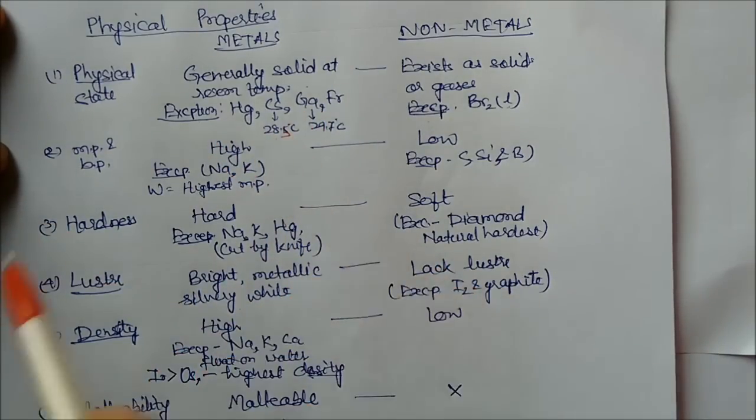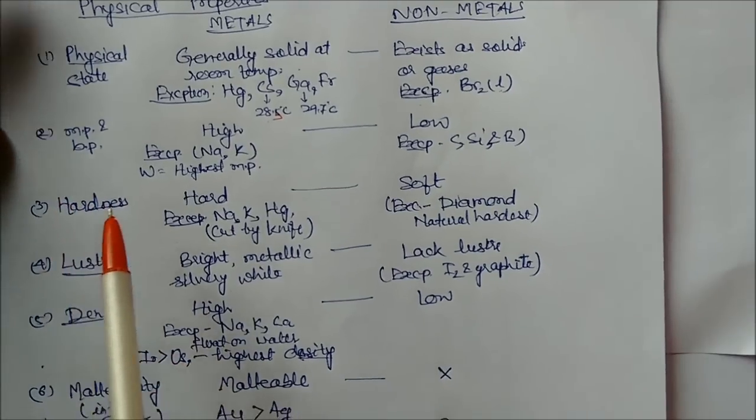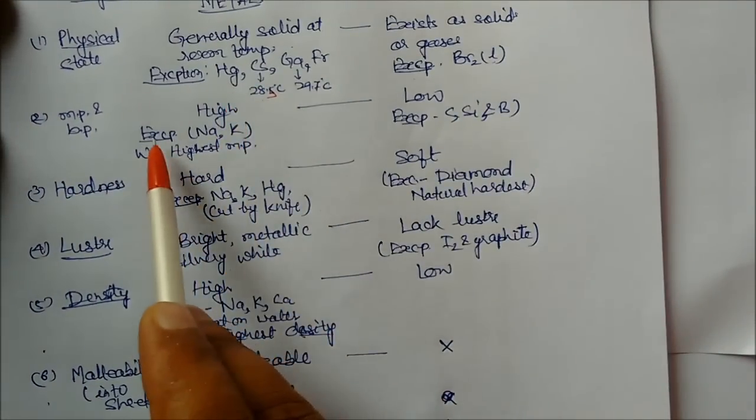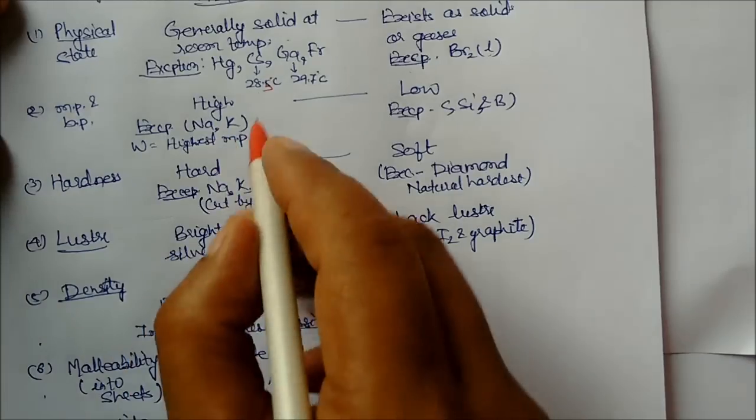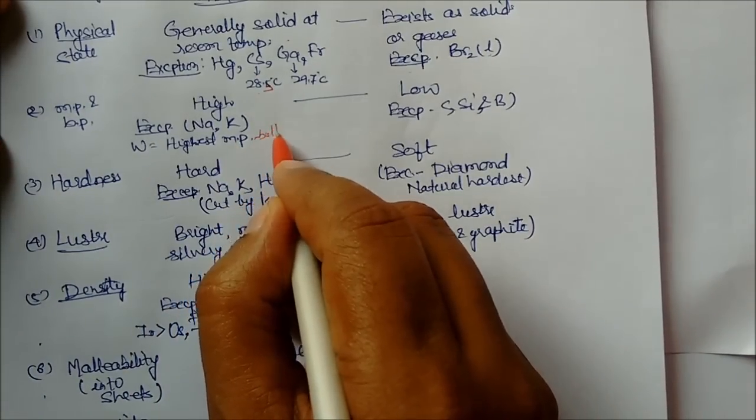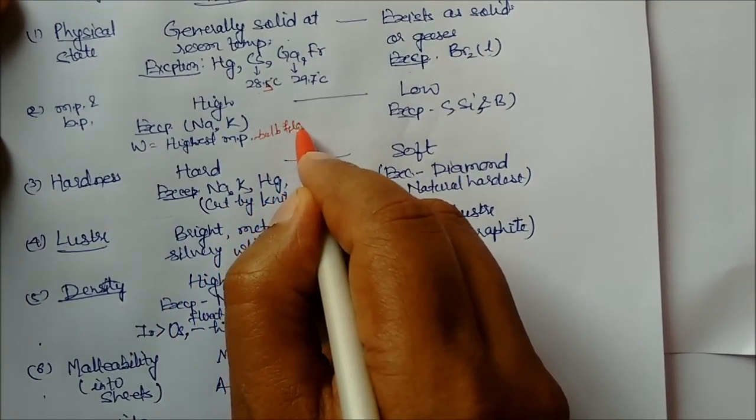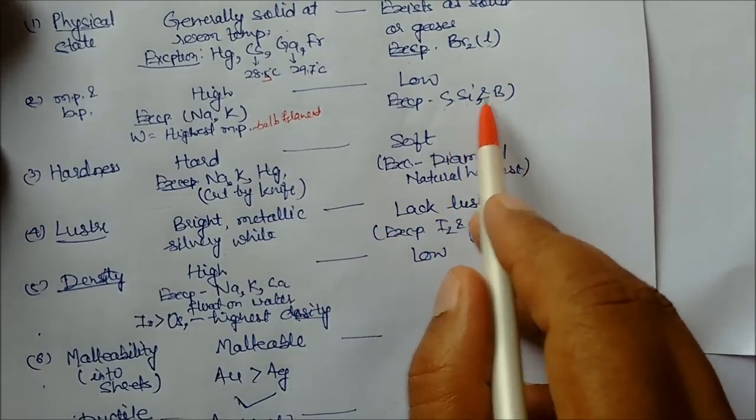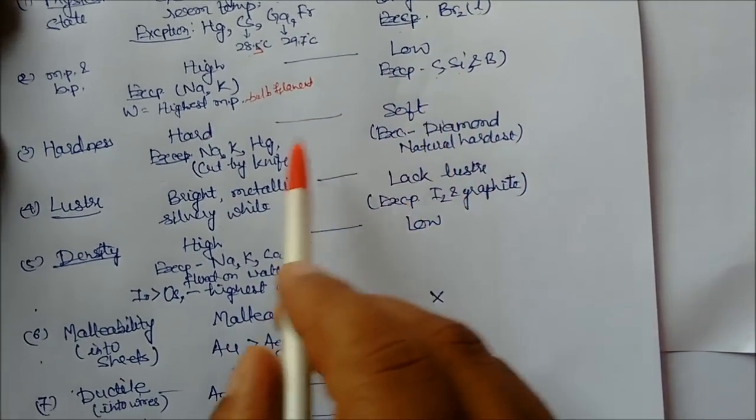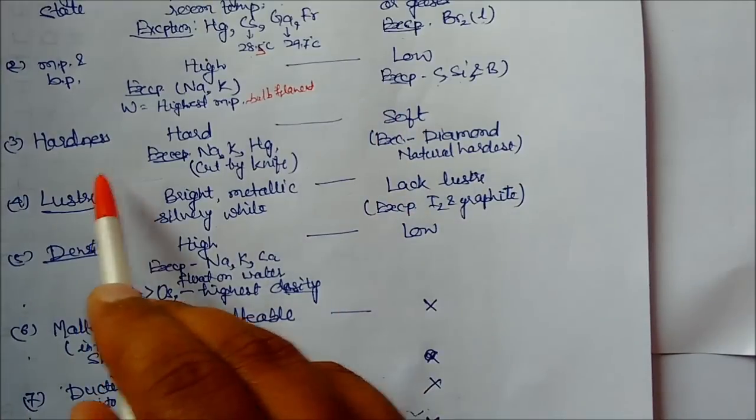Melting point and boiling point: metals have high exceptions—sodium, potassium. Tungsten has the highest melting point; that's why it's used in bulb filaments. For nonmetals, they have low melting and boiling points. Exceptions: carbon, silicon, boron have high melting and boiling points.